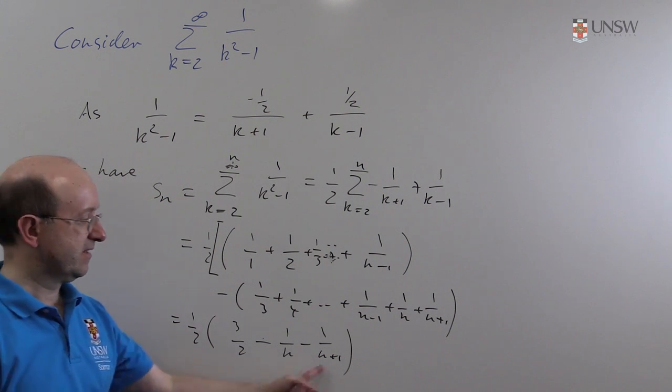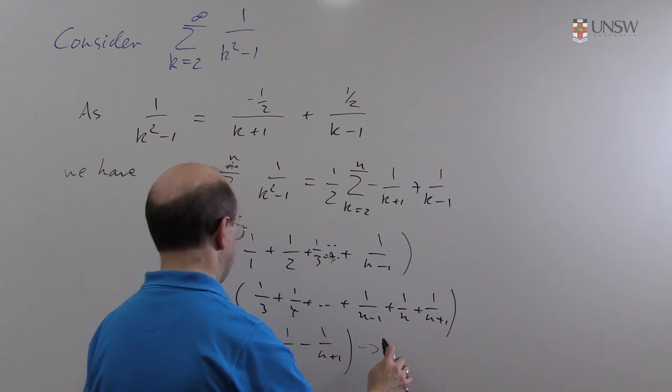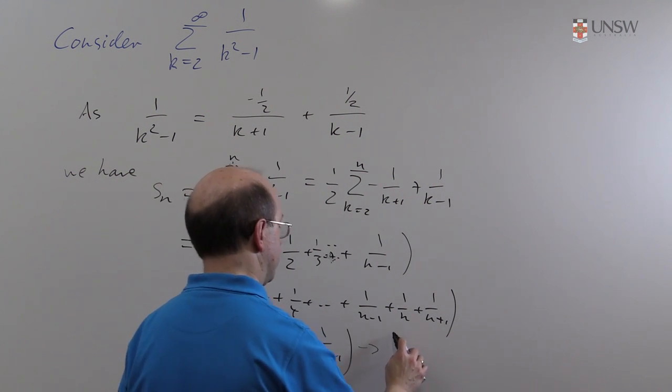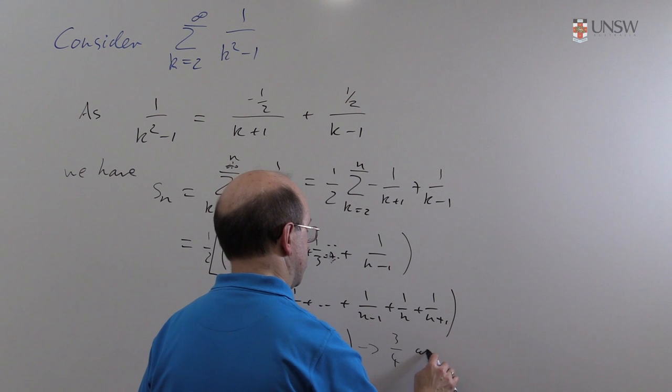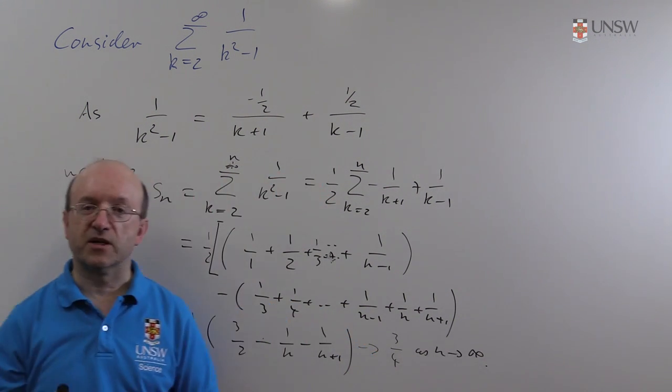That's my formula for the partial sum. And as n goes to infinity, these two terms tend to zero. So this will tend to a half of 3 halves, 3 quarters as n goes to infinity. And that's the sum of this series.